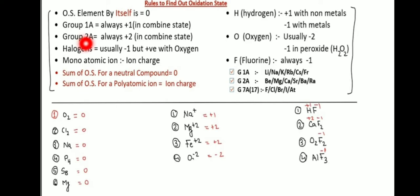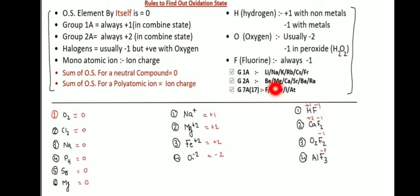Group 2A elements always have charge plus two. Group 2A includes: Beryllium, Magnesium, Calcium, Strontium, Barium, and Radium.